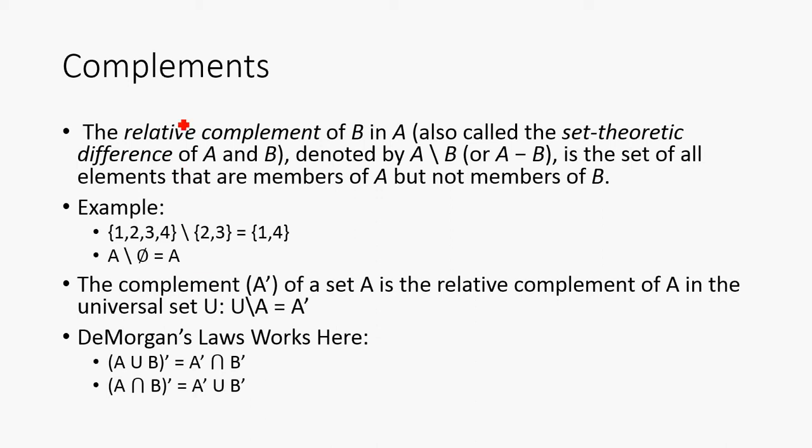So, next we're going to talk about the complements. So, the relative complement right here, relative complement of B and A, given sets A and B. So, the relative complement of B and A, or the set theoretic difference, is denoted by this right here. The universal set is going to be all possible elements in the universe, I guess you could say.